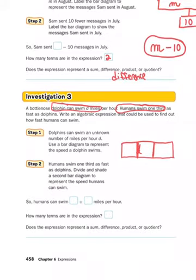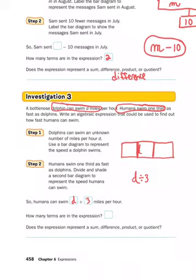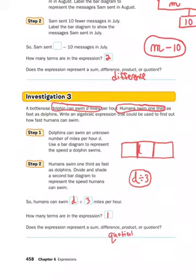Write an expression to find out how fast humans can swim. I took the speed of dolphins, that bar, and split it into three groups. That gives the expression d divided by three. Humans can swim the speed of dolphins, d, divided by three miles per hour. How many terms? This is tricky — it's not separated by addition or subtraction, so it's actually one term. And it represents a quotient because it's division.